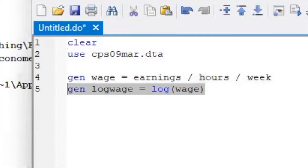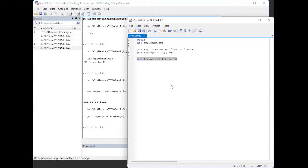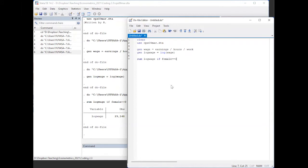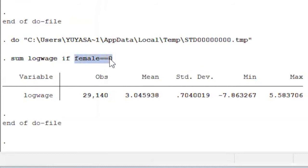Today we want to show the conditional statistics of the log wage given some demographic characteristics. We can still use the same sum command as before, followed by if defining the conditioning attributes. Now we get the average log wage for the male subsample.